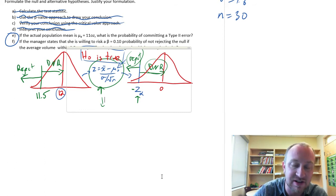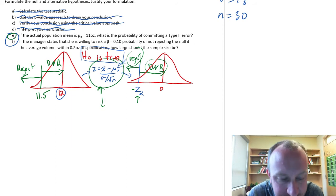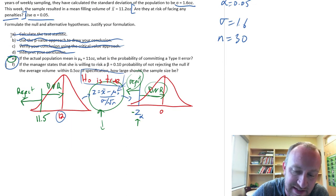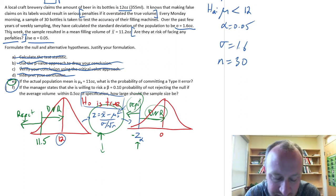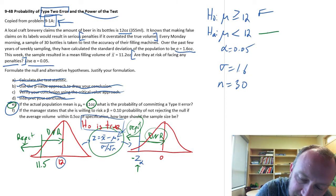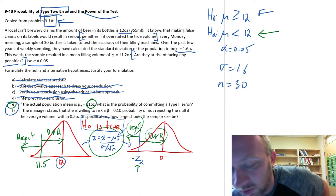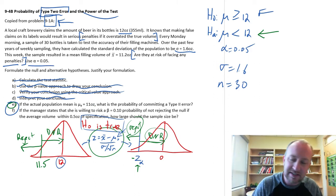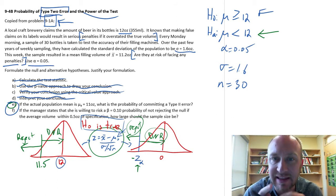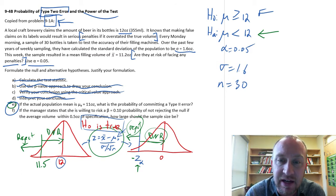Now we have enough information to address the question. Coming back to part E: if the actual mean is 11 ounces, what is the probability of committing a type 2 error? If in reality the mean is 11 ounces, this is a value that satisfies the alternative hypothesis — the alternative is that the mean is less than 12. So we're asking: if it actually is 11, what's the probability that I incorrectly accept the null hypothesis — that I believe it's greater than or equal to 12, when in fact it is 11 ounces?